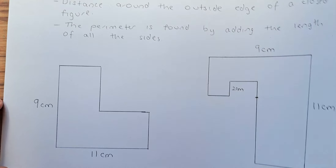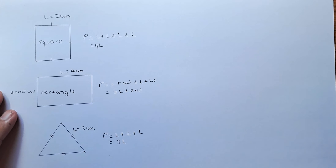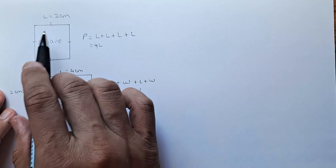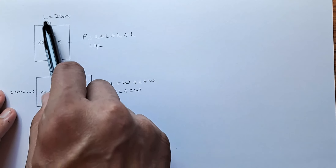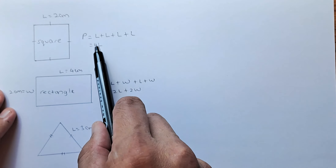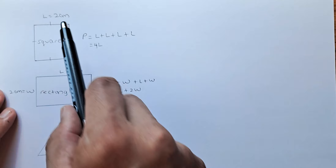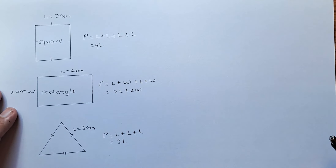We shall look at some of the common shapes and how to calculate perimeter using a formula. For example, if we have a square, all the lengths are the same. To calculate the perimeter of a square, you just add the four lengths together: length plus length plus length plus length gives you four times the length. So if one side is two centimetres, you take four times two and the answer is eight centimetres.